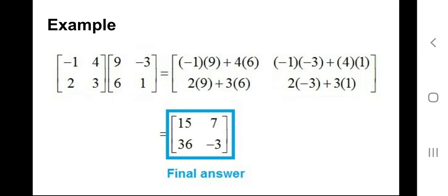After multiplying and adding the elements, the resultant matrix entries are 15, 7, 36, and −3. The resultant matrix is also 2×2 because both given matrices are 2×2. Thank you so much.